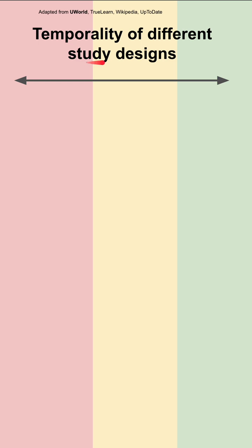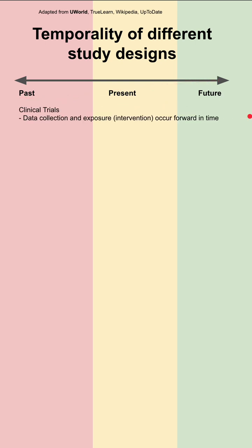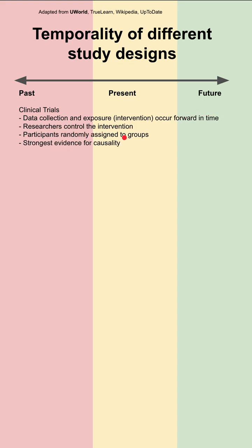This is the temporality of different study designs, adapted from a figure found in UWorld. We have a time arrow with past, present, and future delineated with different colors. The first study design is clinical trials. These require data collection and exposure or interventions that occur forward in time. Researchers control the intervention, and participants are randomly assigned to groups in randomized control trials. These have the strongest evidence for causality.